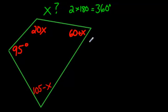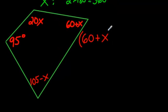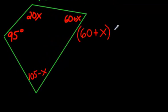So let's do it. We've got, should we start with this one? 60 plus x, okay, you can put it in brackets if you want, plus, let's do the other bracketed one down here, 105 minus x.